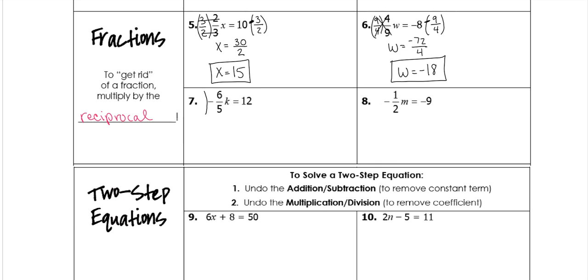Again, we're going to flip it. And this one is negative. So make sure that you multiply by a negative 5 over 6. So negative 5 over 6. These cancel. You're left with just K. 12 times a negative 5 is negative 60 over 6, which ends up giving us negative 10.